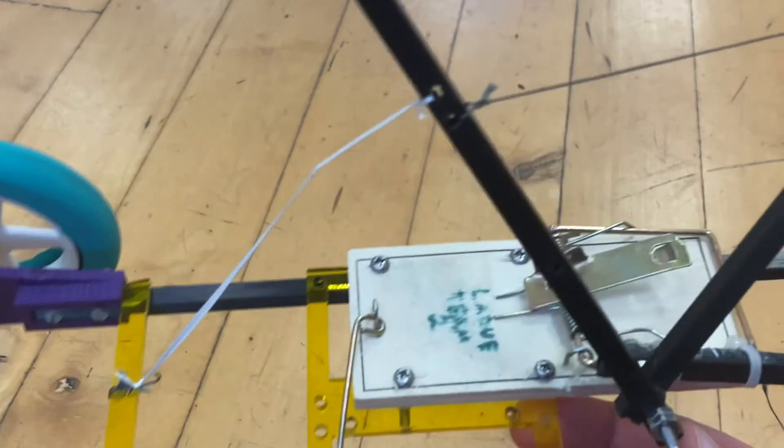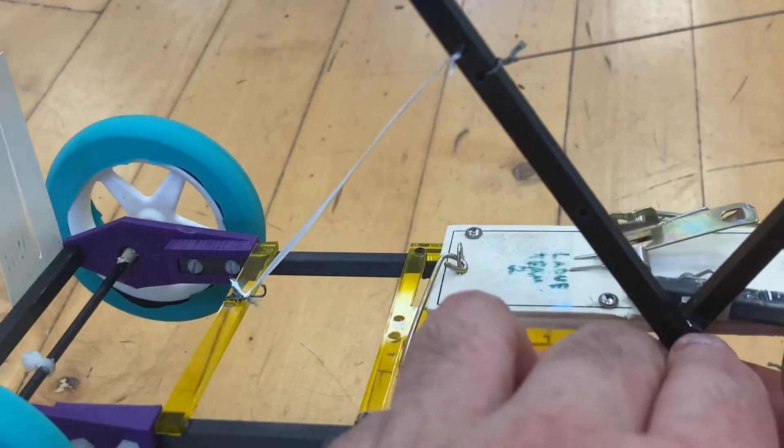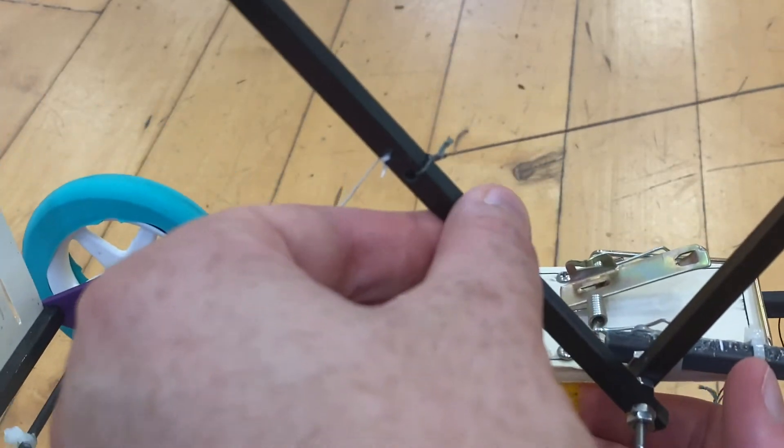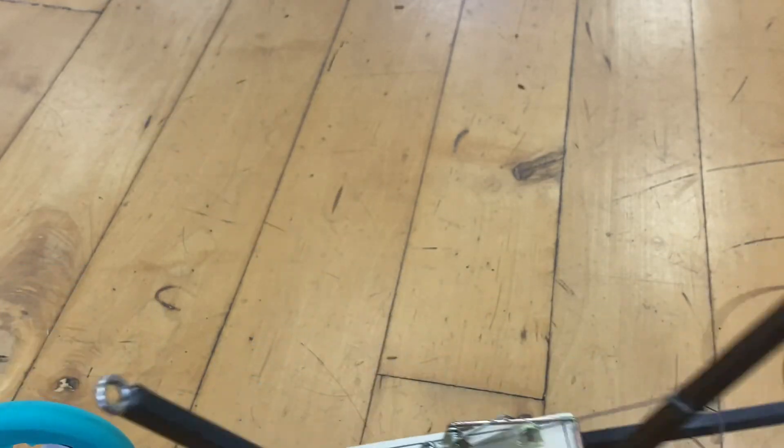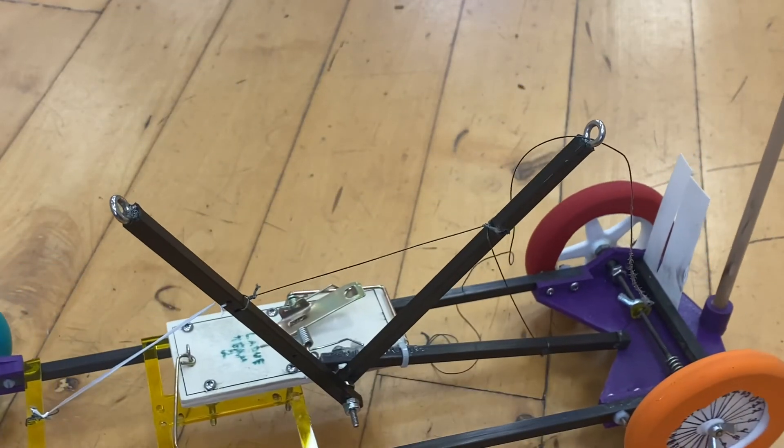And that's it. Basically you just need something to hold everything together, you need some nuts to secure them, you need some string, and then you need three arms and you should be able to make a pretty good compound lever for your mousetrap vehicle.